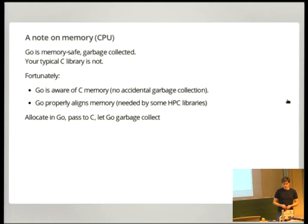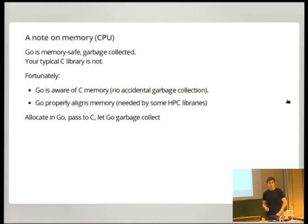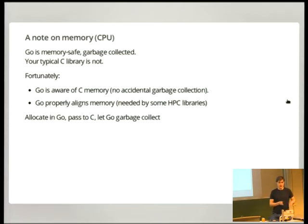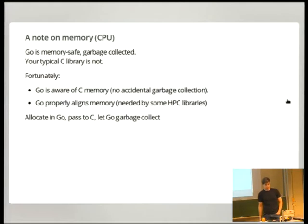Being able to call C is one thing, but we also share memory between Go and C. Won't that be a problem since Go is garbage collected and C is not? Fortunately you don't need to worry about it. Go is aware of C's memory space and will never accidentally garbage collect something that was malloc'd by C. Memory allocated by Go is also nicely aligned, so you can pass it to libraries using SSE or AVX instructions. You allocate in Go, have C crunch numbers, and don't need to worry about freeing any memory.